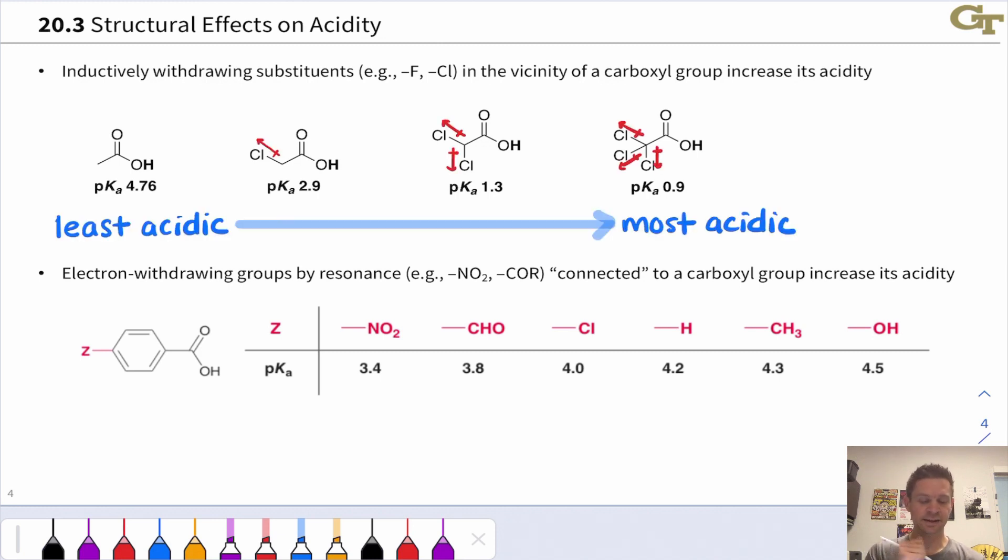and the trichloro, trichloroacetic acid is the most acidic in this series. Again, this has to do with the inductive effect of the chlorines, the polarization of the carbon-chlorine bonds toward the chlorines,